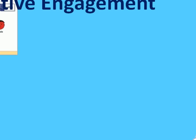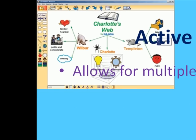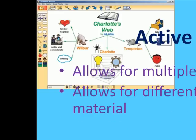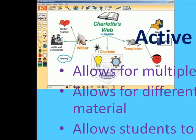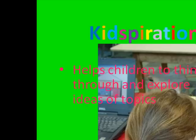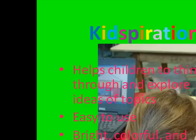Kidspiration allows for active engagement. It allows for multiple options for participation and different ways to interact with the material. It allows students to become interested and involved in what they are learning. It can be used by teachers to create a ditto or worksheet. Students can create their own concept map on something they read, such as the plot of a book, allowing the student to explain what they have learned. Kidspiration helps children to think through and explore ideas on topics. It is easy to use, bright, colorful, and interactive. It allows for outlining and diagramming and has many useful features. The software helps to improve and expand on subjects.